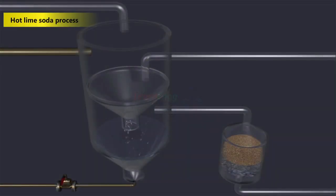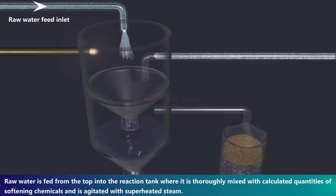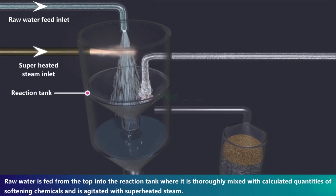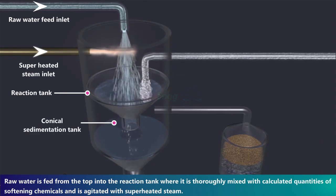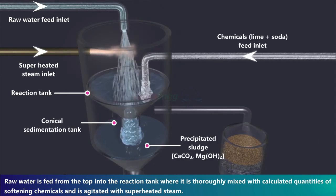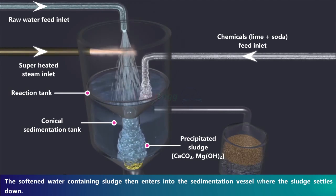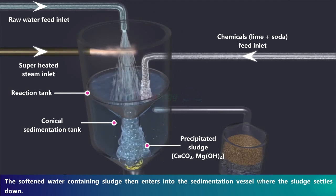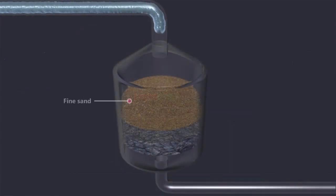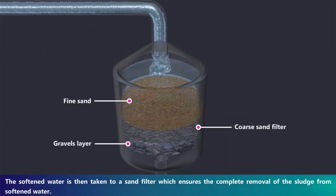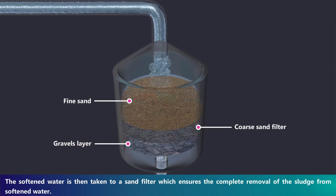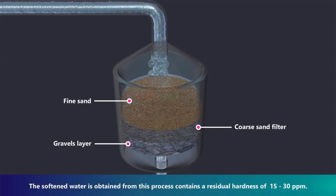Hot lime soda process: raw water is fed from the top into the reaction tank, where it is thoroughly mixed with calculated quantities of softening chemicals and agitated with superheated steam. The softened water containing sludge then enters a sedimentation vessel where the sludge settles down. The softened water is then passed through a sand filter to ensure complete removal of sludge. The water obtained from this process contains a residual hardness of 15 to 30 ppm.